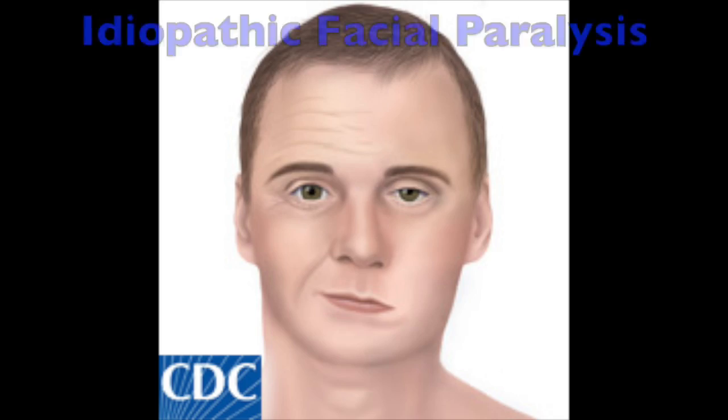Bell's palsy, or now more officially called idiopathic facial paralysis, is, like the name suggests, paralysis of cranial nerve 7 — the nerve roots that control the motor muscles of the face — often presenting like this. But first, let's go over a little bit of history.